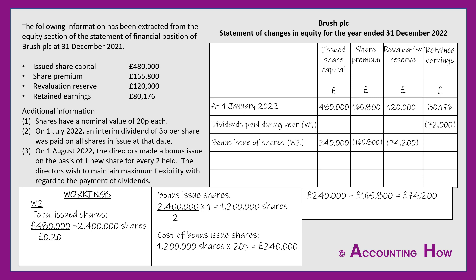A useful tip: the bonus issue row should effectively cancel itself out. The issued share capital increases by £240,000, and the share premium plus revaluation reserve decrease by a total of £240,000, so the total column for that row would be zero. Retained earnings were not needed here, but if they had been we would have used them last, since that is the only reserve available for paying dividends.